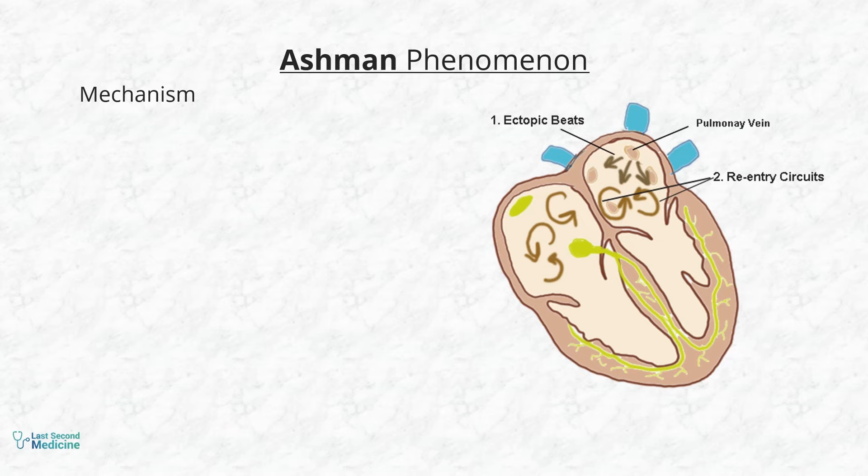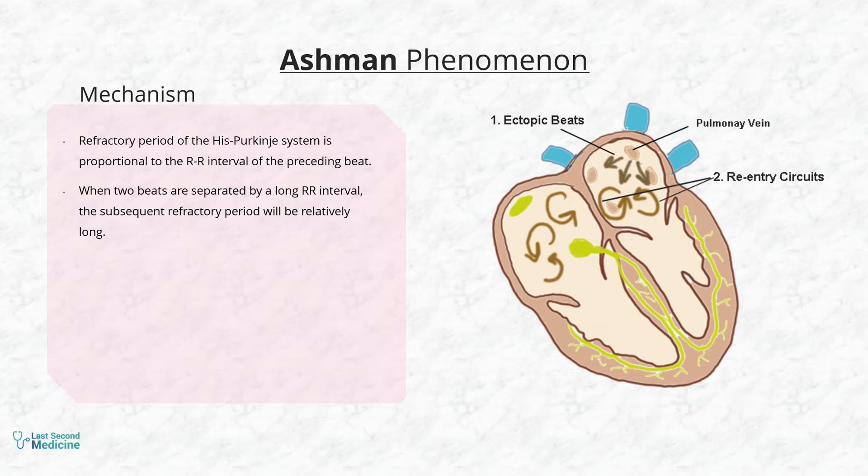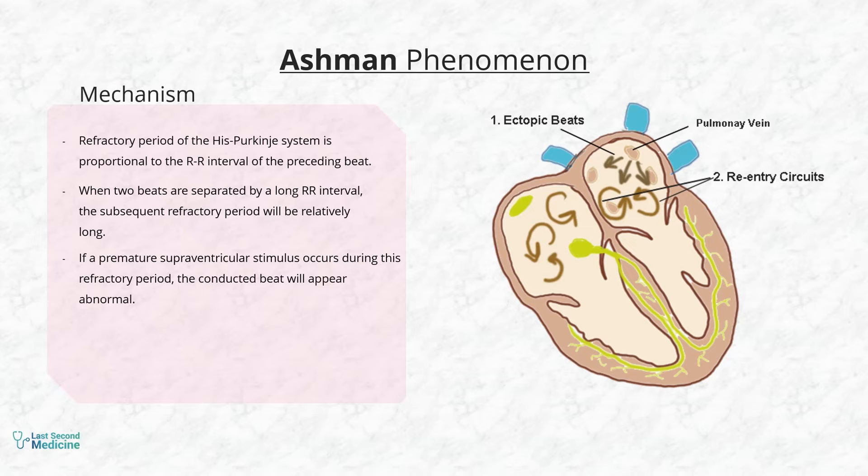As you may know, the refractory period of the His-Purkinje system is proportional to the R-R interval of the preceding beat. So when two beats are separated by a long R-R interval, the subsequent refractory period will be relatively long.